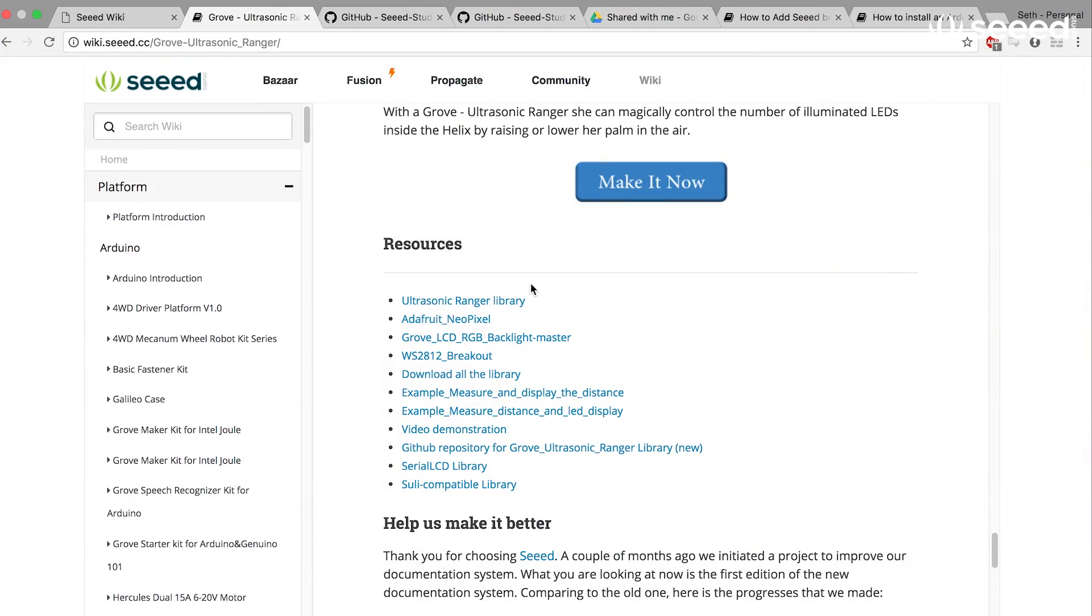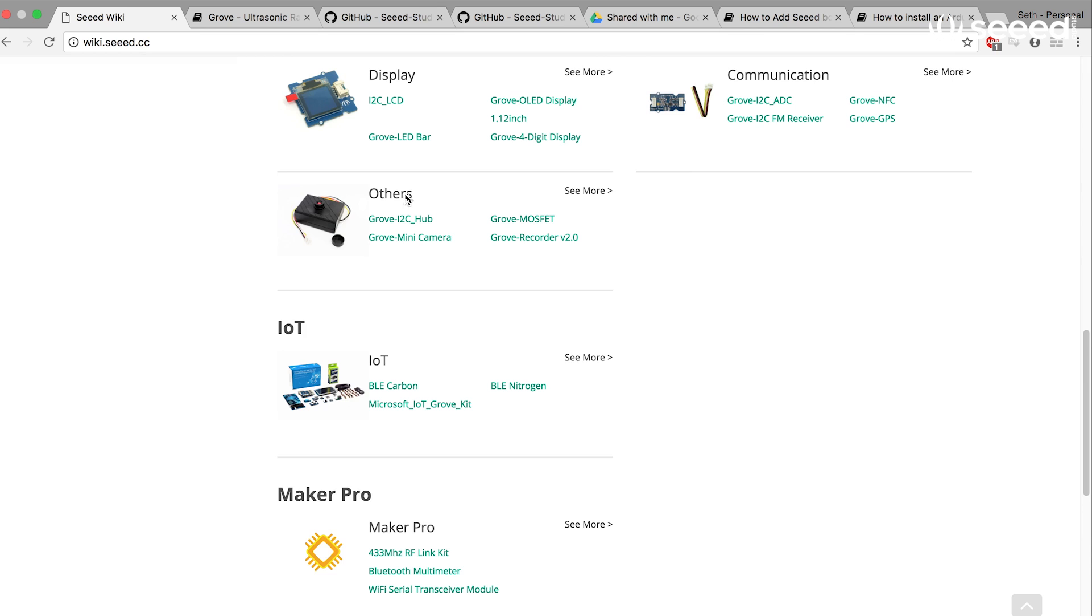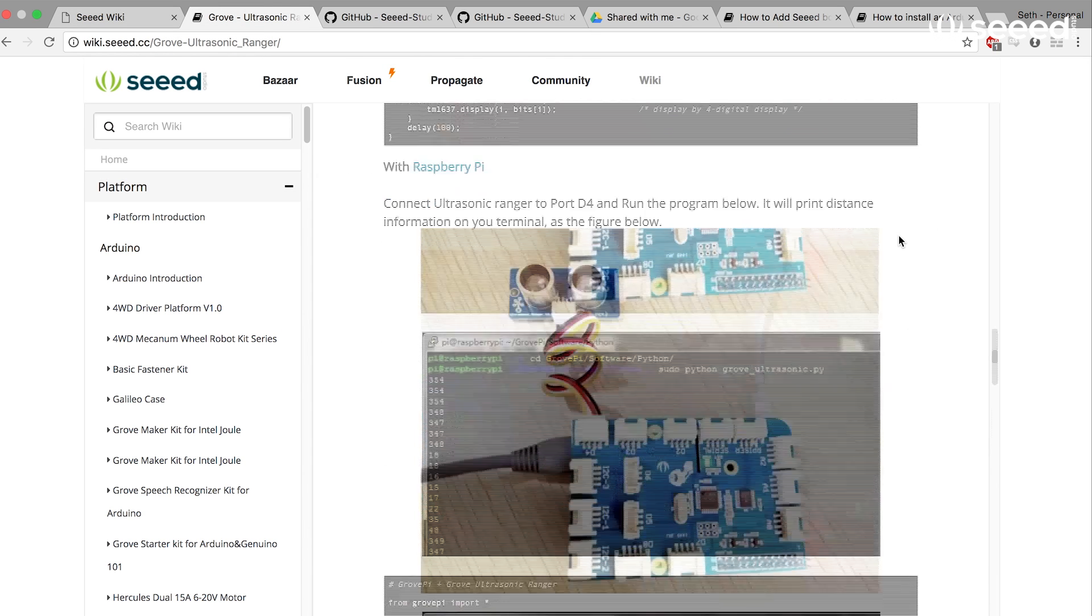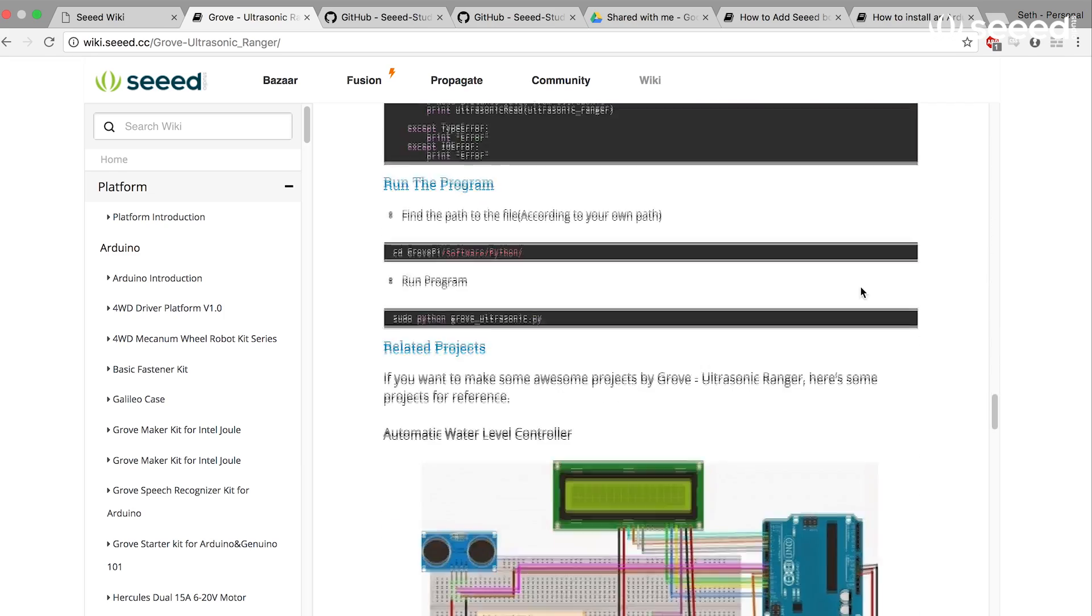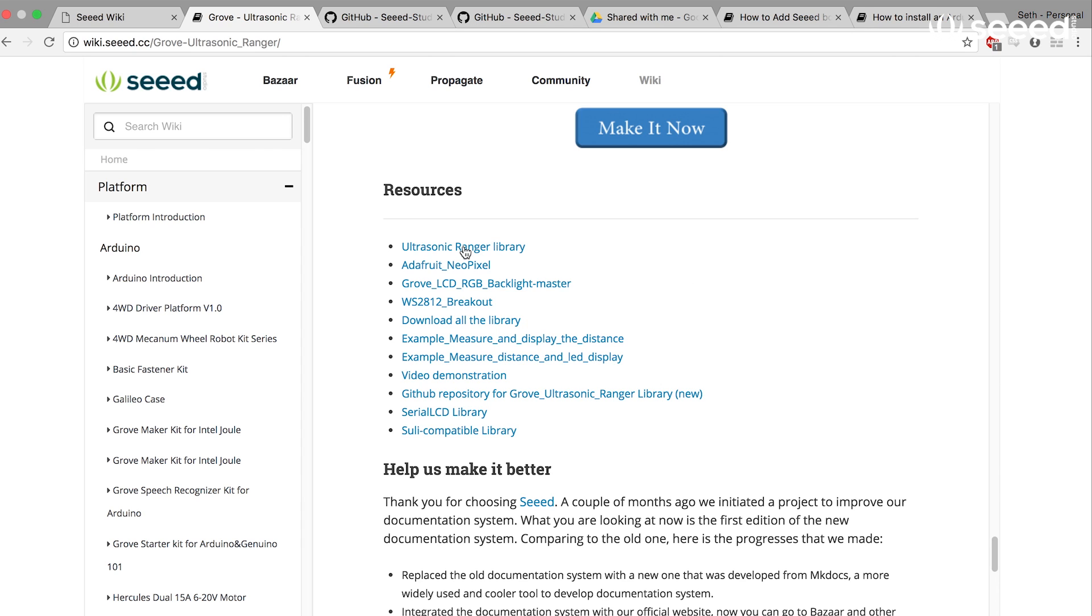Okay, so first things first, go over to the Seeed wiki, wiki.seeed.cc. You can scroll down over to our Grove sensors and go to the ultrasonic ranger page. It has some information, but also has all the downloads you will need right here. I just right click save all. You can grab them really quickly or download all the libraries.